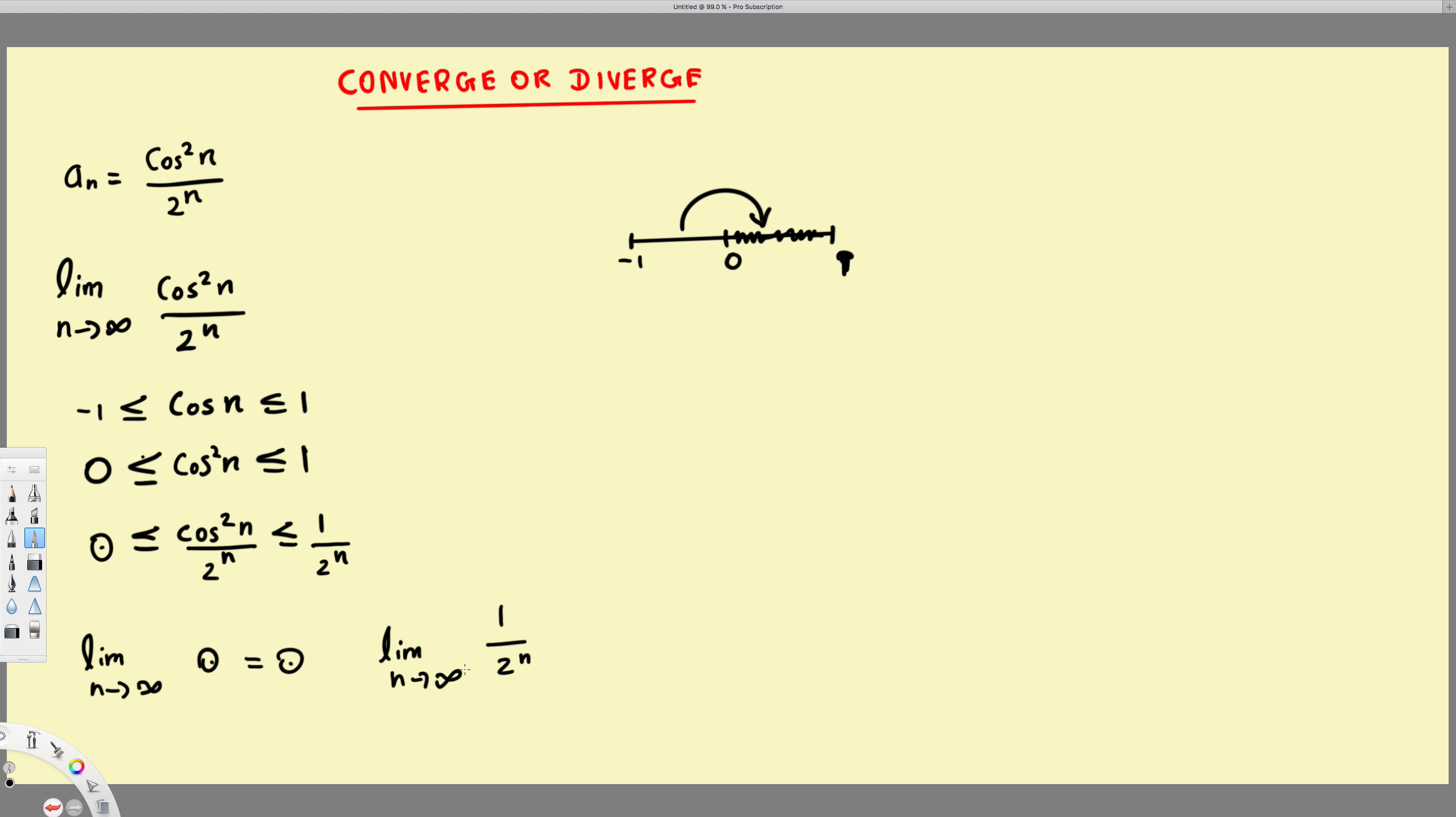And here if we substitute, like if the n becomes bigger and bigger, this value is going to be 0. Because if you substitute infinity for n value, that's going to be 0.